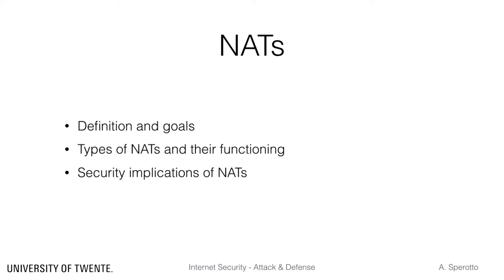Similarly, as for firewalls, we have explained the functioning of the mechanism of network address translation. We have then seen which type of NAT exists, and most importantly we have discussed the security implications of NATs, and reasoned about the similarities and differences between firewalls and NATs.